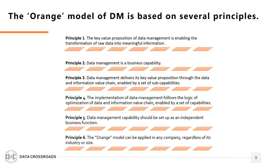First of all, the name of the model. The model was named after the fruit. Few people know that an orange is actually a hybrid between a pomelo and a mandarin. It was the hybrid analogy that was the inspiration for the name of the model. It perfectly symbolizes the attempt to match the pomelo of existing data management models with the mandarin of existing data management maturity models. I will now briefly introduce the key principles of the model, and in the course of the presentation I will provide deeper explanation for some.